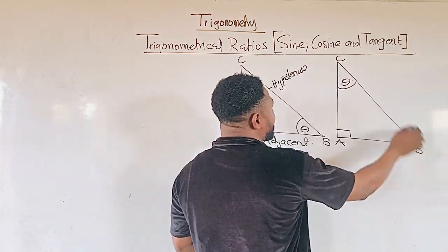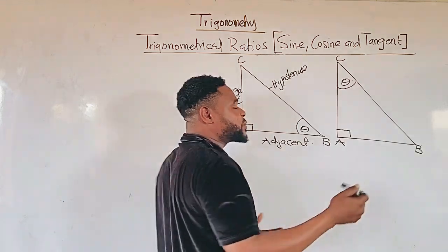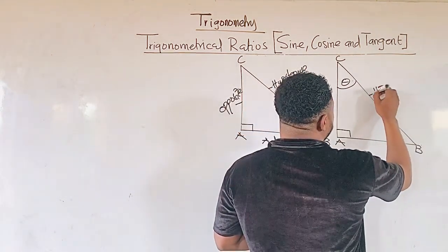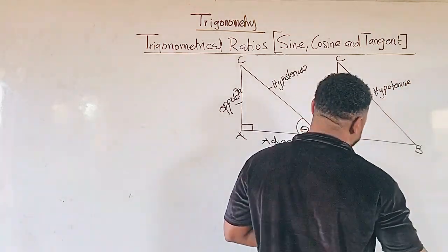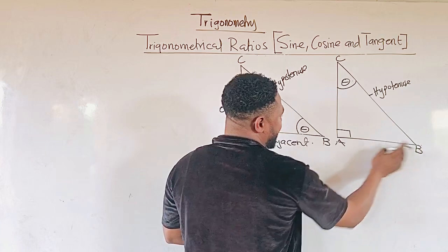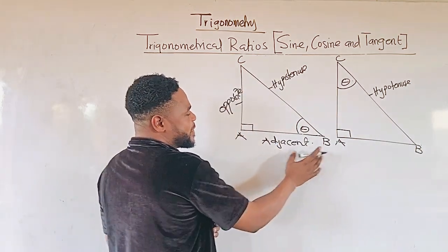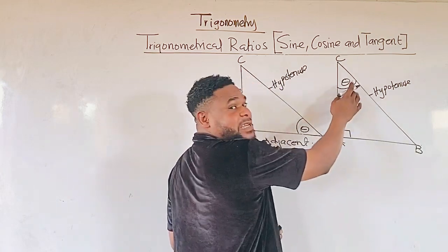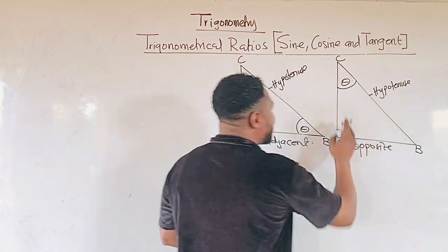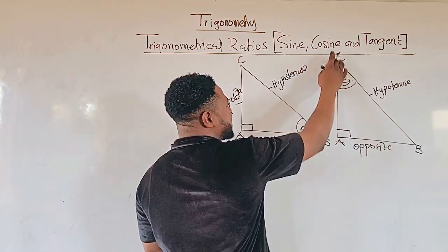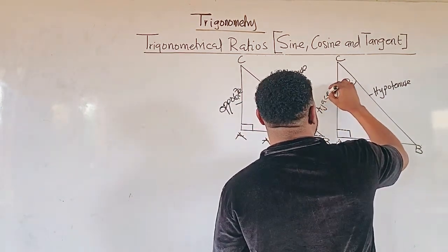We have line BC, and that one all the time faces the 90 degrees and it's called hypotenuse — the hypotenuse will not change. But we can see AB. Our AB here is under this angle and we call it adjacent. But here, our AB is facing the angle, so it will now become opposite. Then we have line AC, which is under this angle, and now it will be called adjacent.